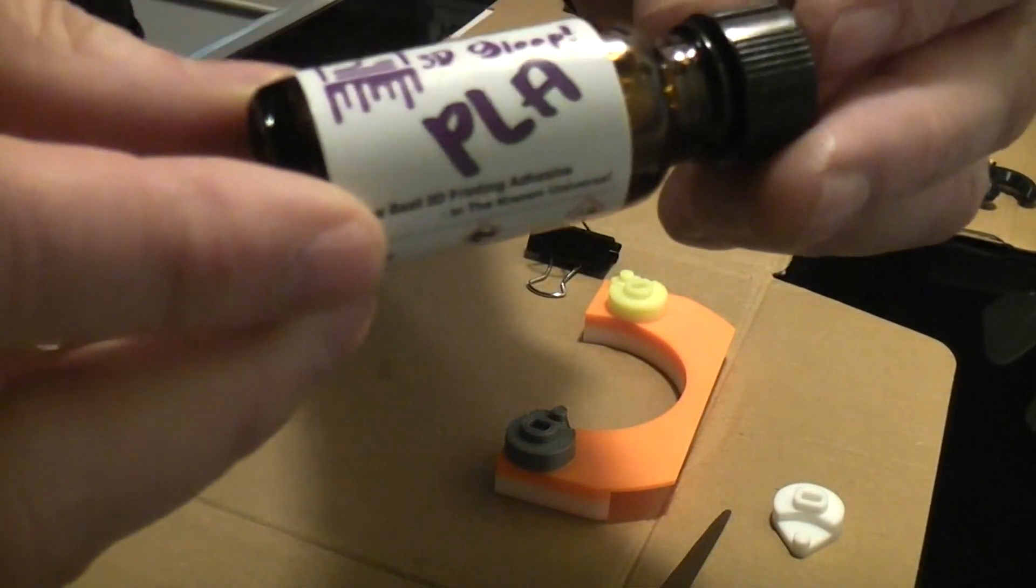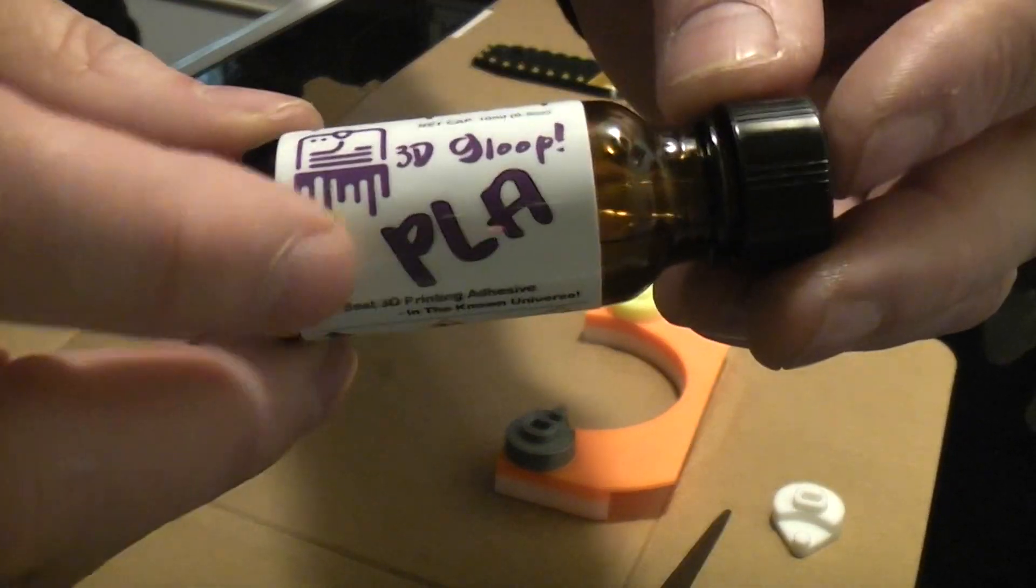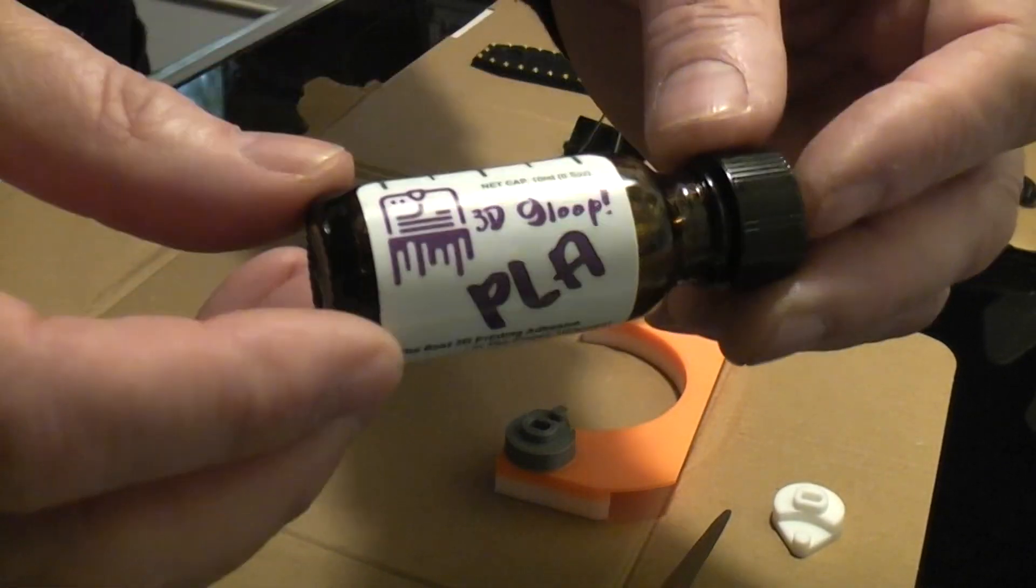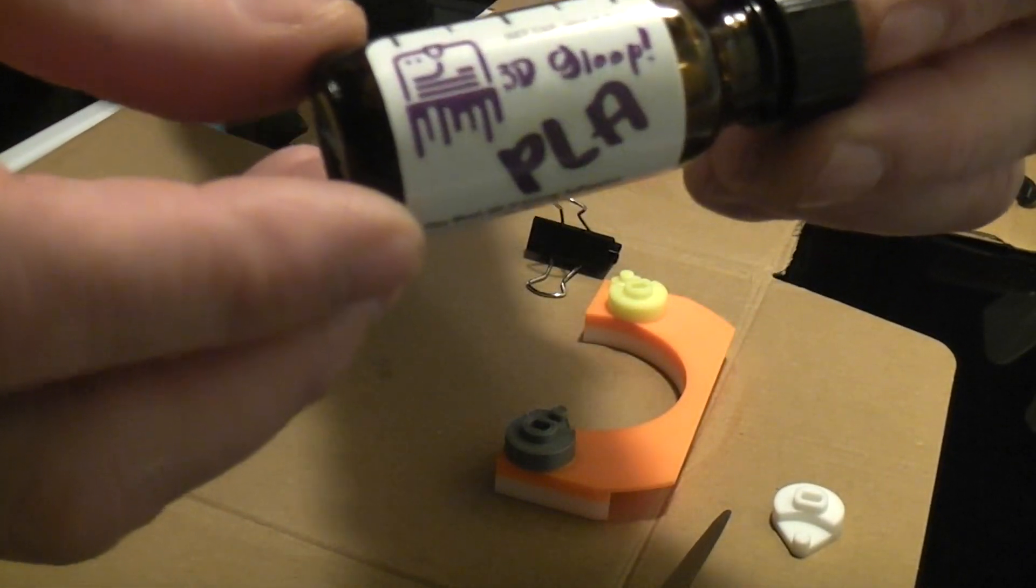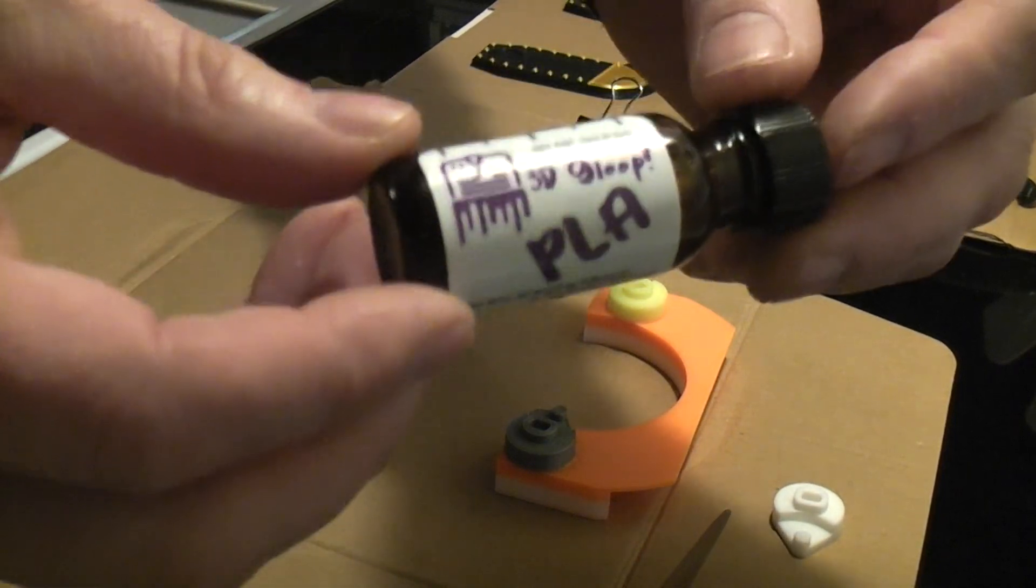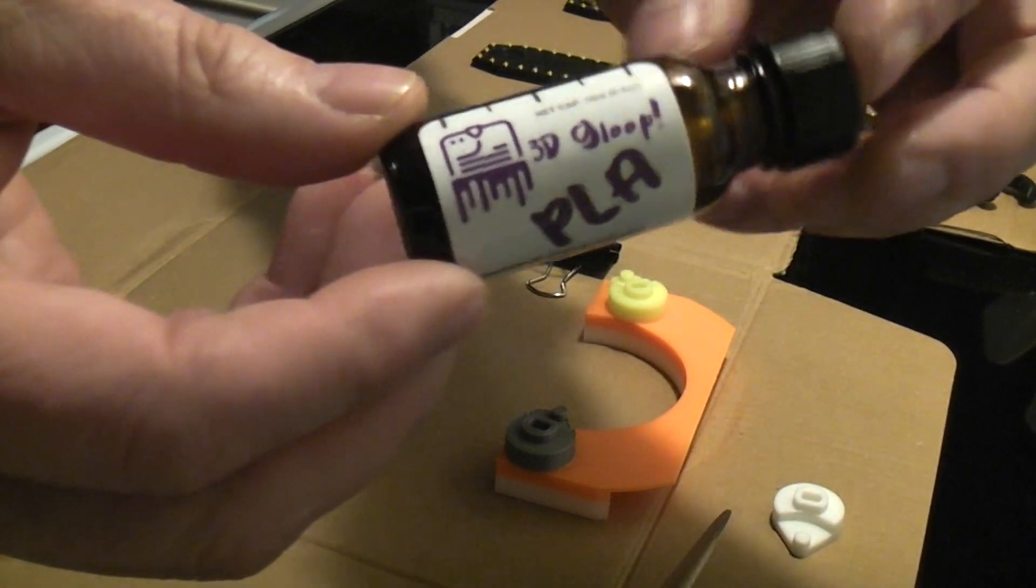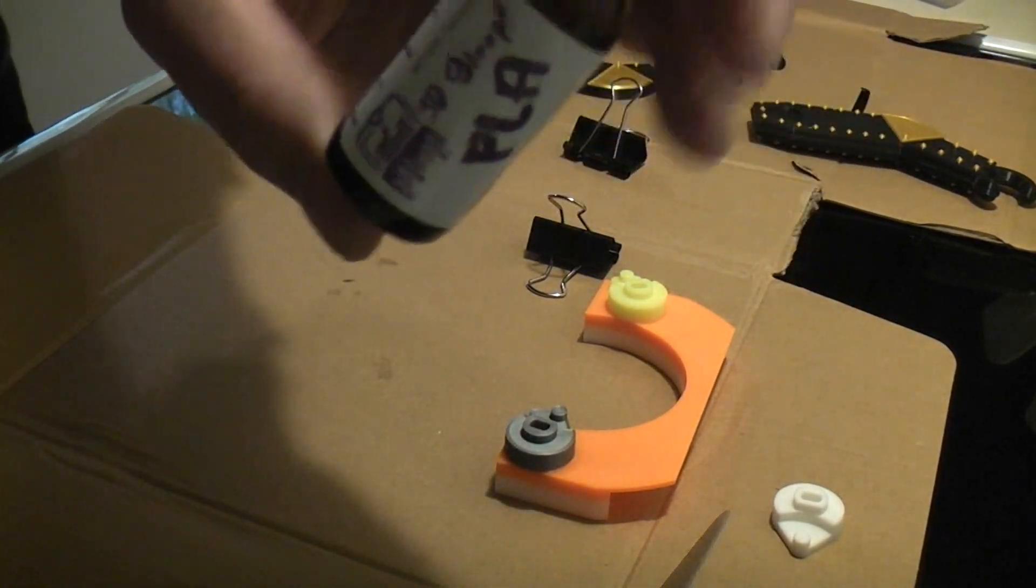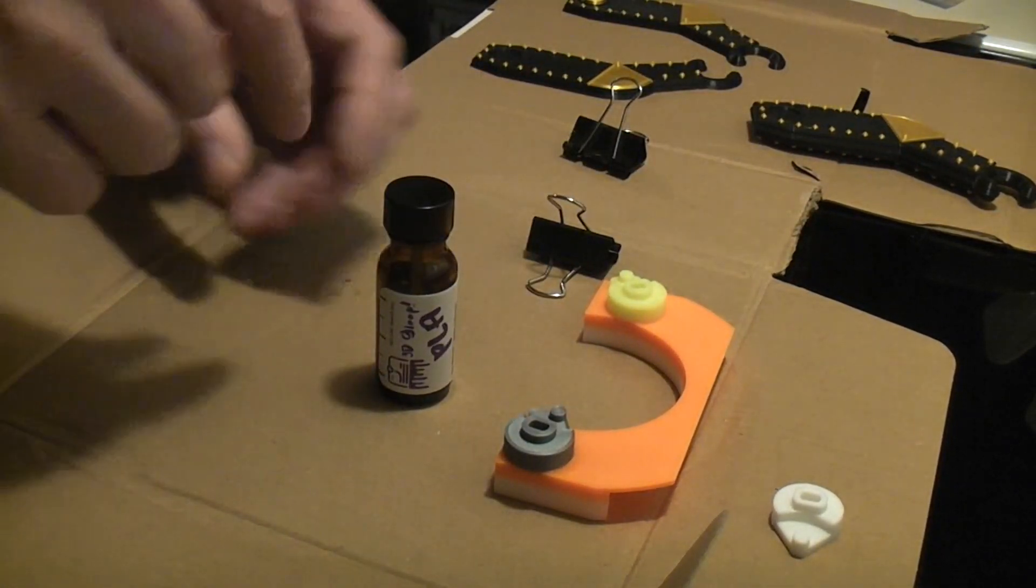This is going to be a very short video about gluing PLA using the 3D Gloop for PLA. I originally saw the video on Joel's channel, 3D Printing Nerd, and I went to the website and they had a place where we could order a free sample to try, which I ordered, and it came.